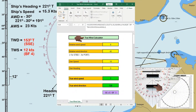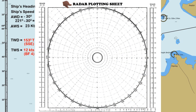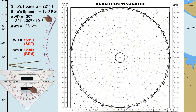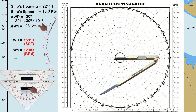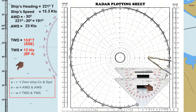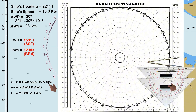Before we check our answers using the true wind calculator, let us use this radar plotting sheet to determine the true wind direction and speed using the same given information, so that we can compare both methods. We will use a scale of 3 to 1 to measure the distance so that the apparent wind speed of 23 knots will not go beyond the plotting sheet. We will use these symbols: E to R is the own ship course and speed, E to W is the apparent wind direction and speed, and R to W is the true wind direction and true wind speed.